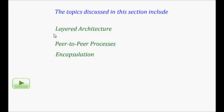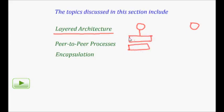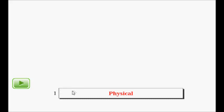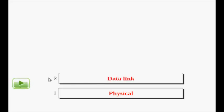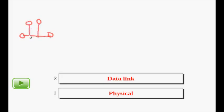Layered architecture means that for two computers to communicate there is a layered architecture. Different layers provide services to the layer above. The first layer is the physical layer, which has the physical wires, cables, or wireless medium that transmits your data. Then we have the data link layer, which decides how multiple computers sharing a common Ethernet LAN will use that shared medium.